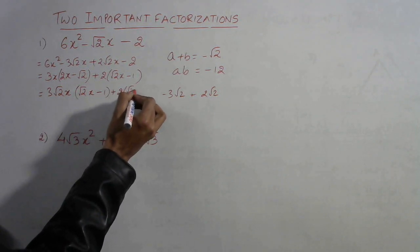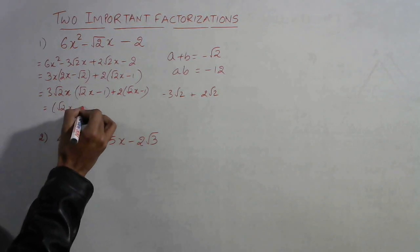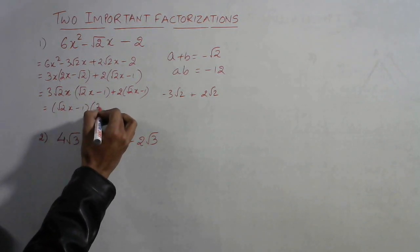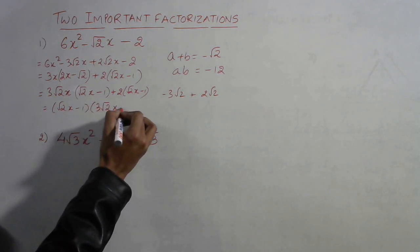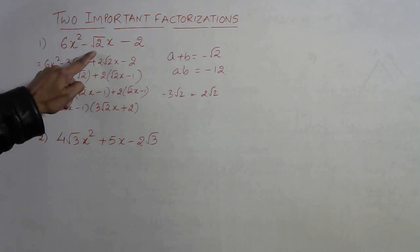And now you see the brackets are same thereby giving you the first factor as the bracket portion and the second factor as the portion which is out of the bracket. This is the factorized form of the expression. So this is the method you need to follow when there is a square root sign in the middle term.